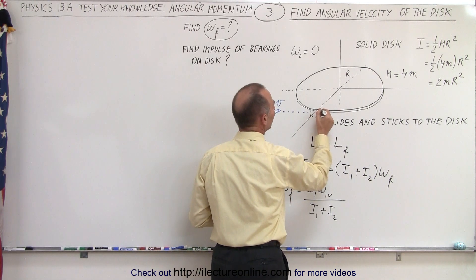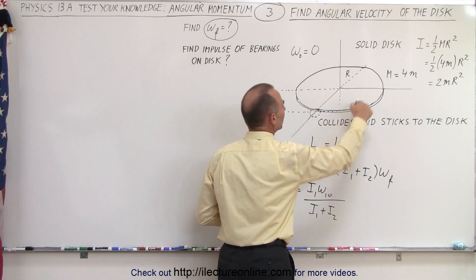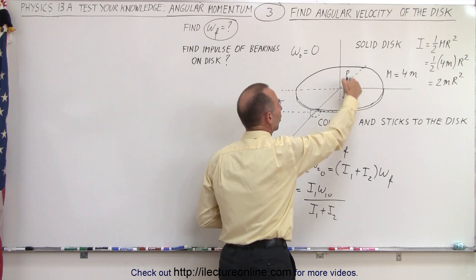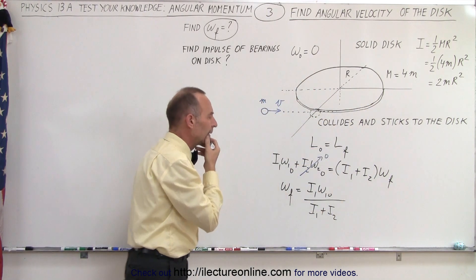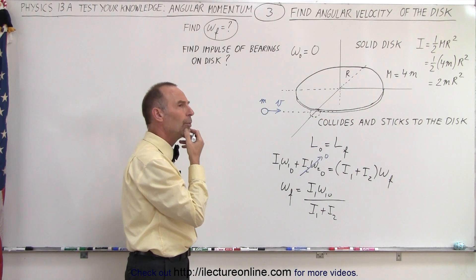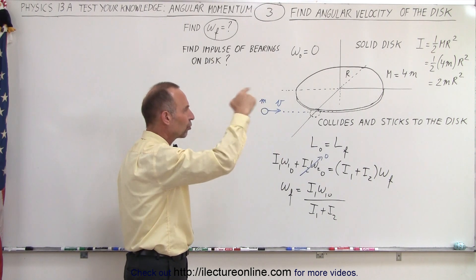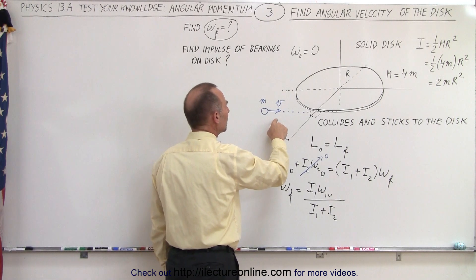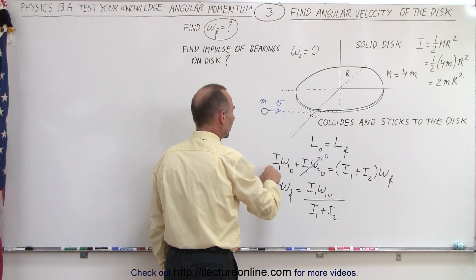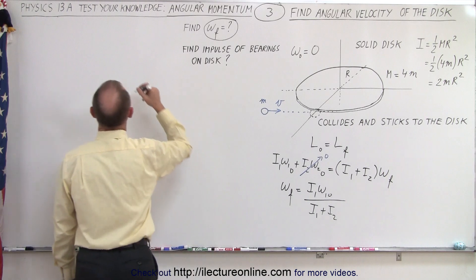Well, what you can think about is when it's traveling, once it sticks, it'll be traveling in a circular path of radius r. So the moment of inertia of an object traveling in a circular path—that would mean the moment of inertia I can be expressed as this.